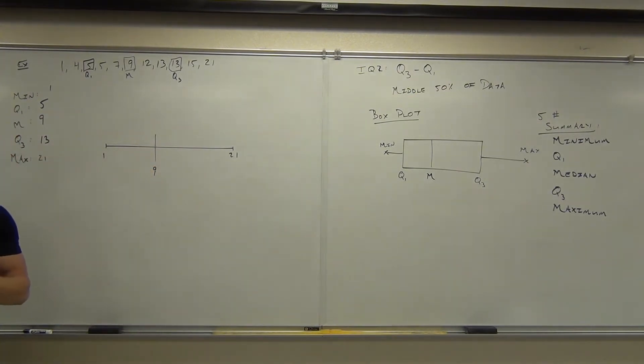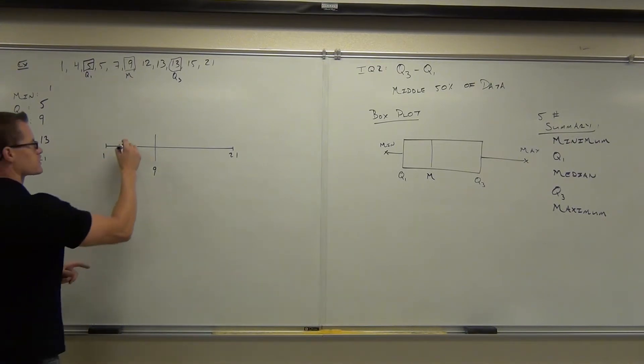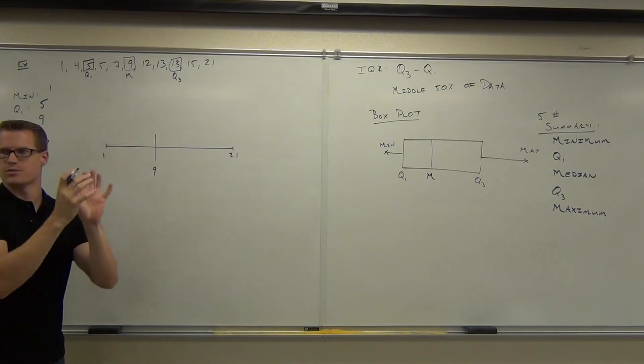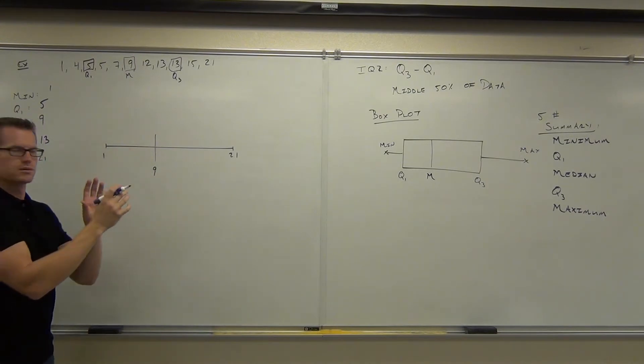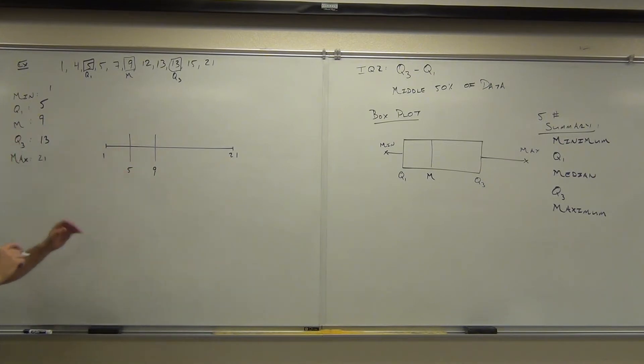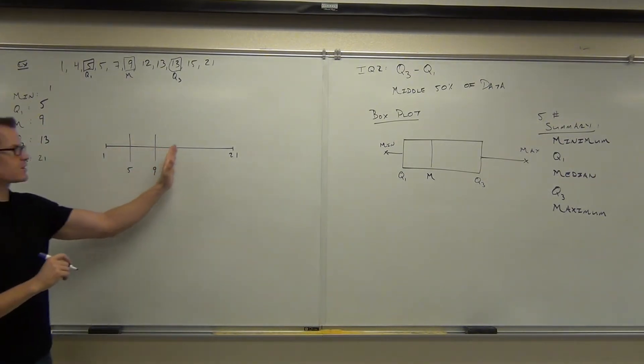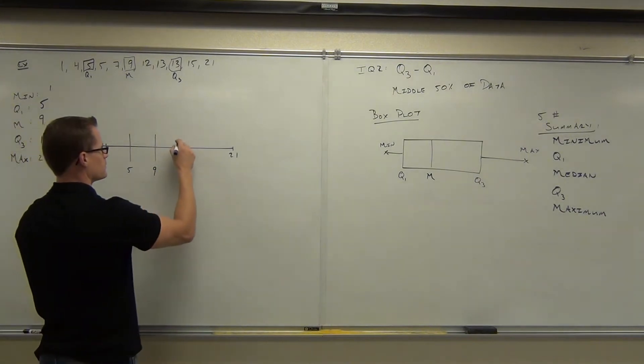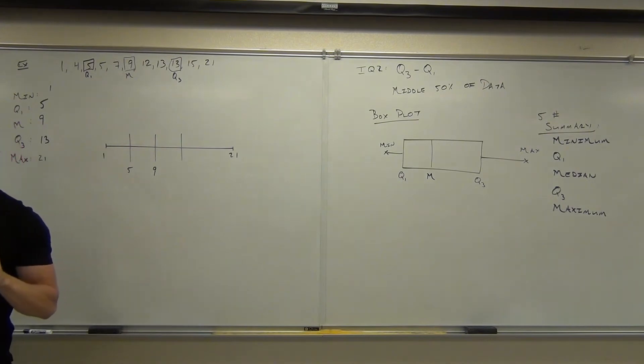Now we're going to find the Q1 and the Q3. We'll put them on here as well. How about the 5? Is the 5 closer to the 1 or the 9 or is it right in the middle? It's 4 units away from each one, right? And then we'll do the Q3, 13. 13 is definitely closer to the 9. You want it as close to a scale as possible, okay?